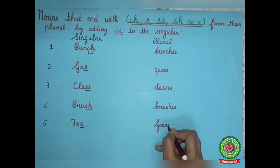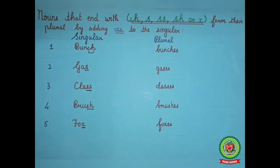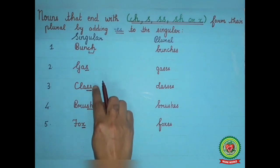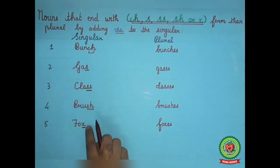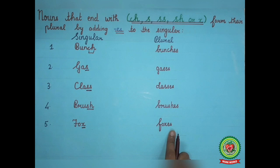Children, you can see that words ending with 'ch,' 's,' 'ss,' 'sh,' or 'x' form their plural by adding 'es' to the singular. I hope that you have understood rule 1 and rule 2 for changing singular nouns to plural nouns. Please revise these two rules from your elementary grammar book. Thank you.